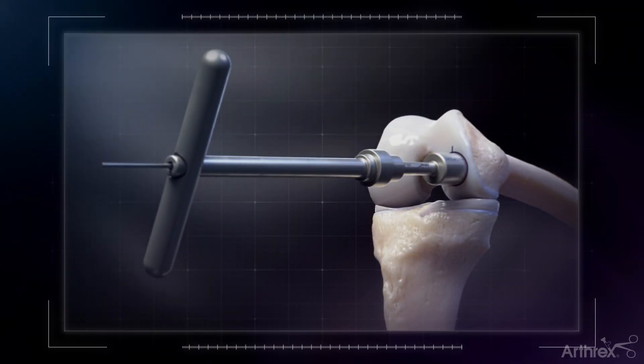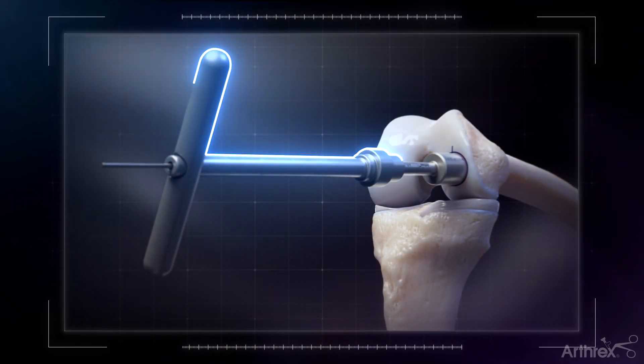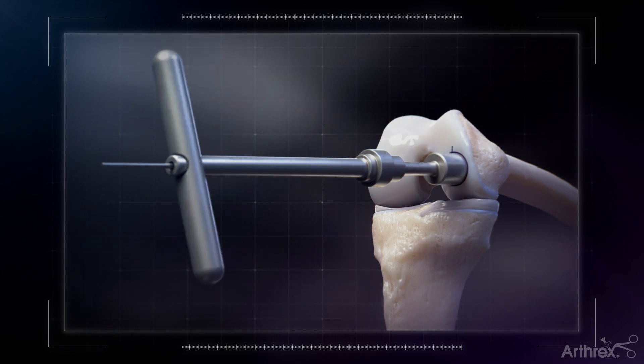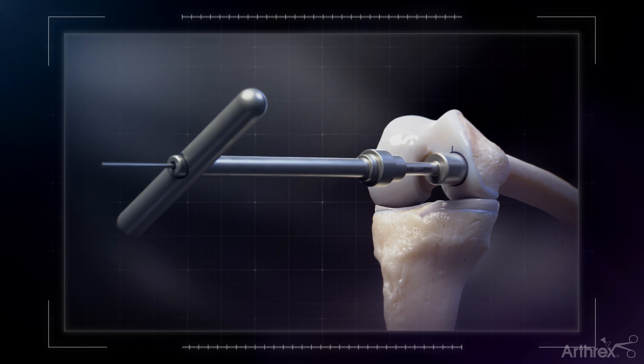Assemble the appropriately sized recipient scorer with the Quick Connect T-handle and 2.4 mm guide pin. Then, use it to score the articular cartilage to the subchondral bone.